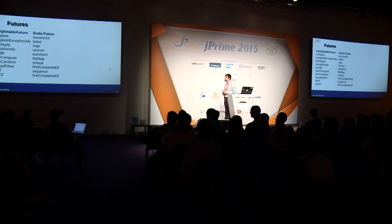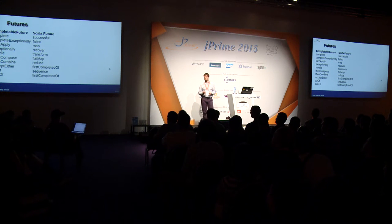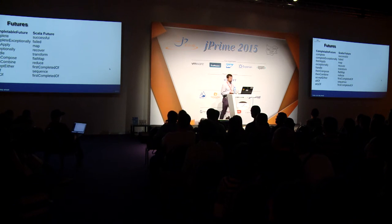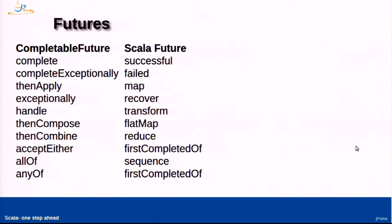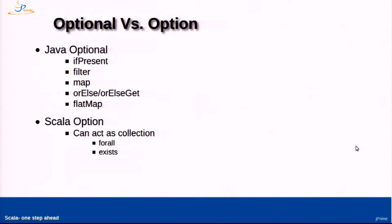A quick look at futures: Scala has a Future which is very similar to Java 8's CompletableFuture. The CompletableFuture in Java 8 is much more sophisticated than the basic Future Java already had, but the most used methods in Java have almost exact analogues by name in Scala.